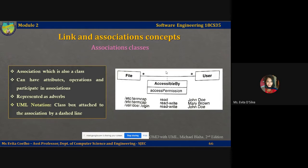If you look at this diagram, you have two classes: File and User, with an association between them. Reading it one way: a file has multiple users; reading it the other way: a user can access multiple files. The association is named 'accessible by.' Since this association has attributes and operations associated with it, it is denoted as an association class. The UML notation for an association class uses a regular class box connected to the association line by a dashed line. The attribute here is 'access permission.'